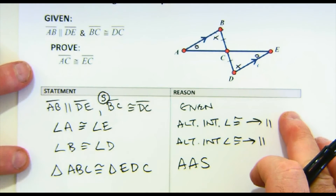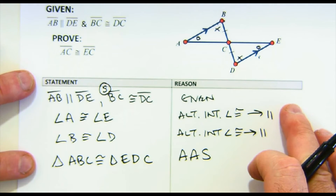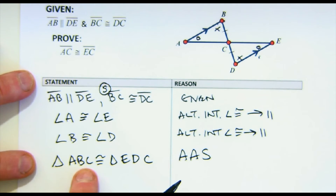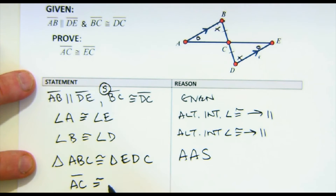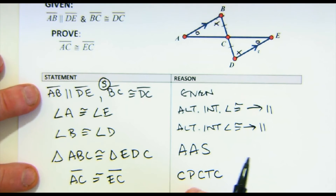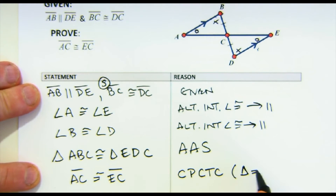Now that we've established the congruence of the two triangles, we know that the pieces all have to match up. A to C has to match E to C, so we can jump straight there: AC is congruent to EC. Our reason is CPCTC — corresponding parts of congruent triangles are congruent. Sometimes I've just said 'because the two triangles are congruent,' meaning all the parts match up.